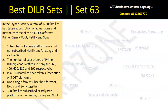Let's try to see how we can capture the information given to us. What is given to us is we have a total of 1,280 families who have taken a subscription of at least one and maximum three of the five OTT platforms. Families would have taken at least one, two, or three — four or five is not possible because maximum is three. So: exactly one plus exactly two plus exactly three should equal 1,280. This is equation number one.